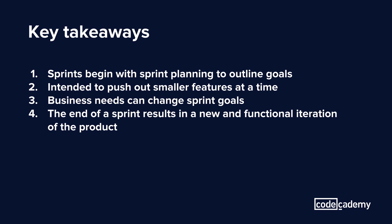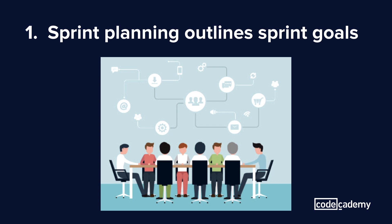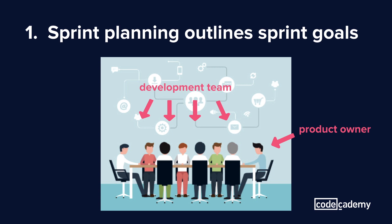Now that we've defined what a sprint is, these are some key takeaways that make sprints unique to other software development cycles and how sprints can accelerate the development process. Sprint planning happens at the beginning of the sprint. In this meeting, the team outlines the goals that will be completed by the end of the sprint. The product owner, who is responsible for the product's growth, will work with the developers to outline a list of goals to be completed.